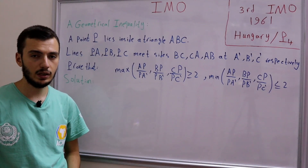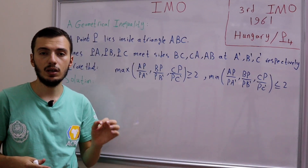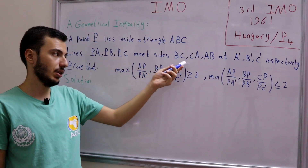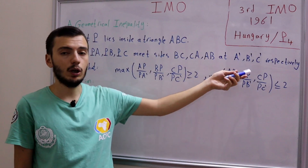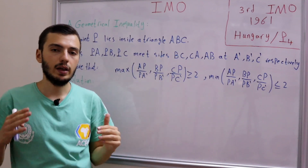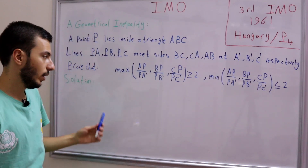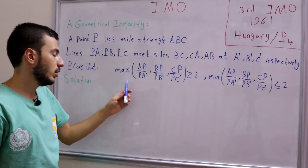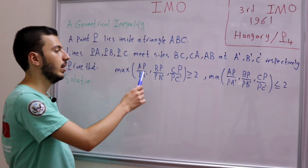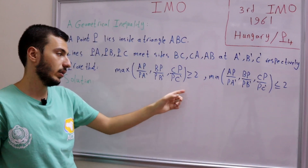So the problem statement goes as follows. A point P lies inside a triangle ABC. Lines PA, PB, and PC meet sides BC, CA, and AB at points A', B', C' respectively. So we extend the three cevians AP, BP, and CP to intersect the three sides of the triangle at points A', B', and C'.